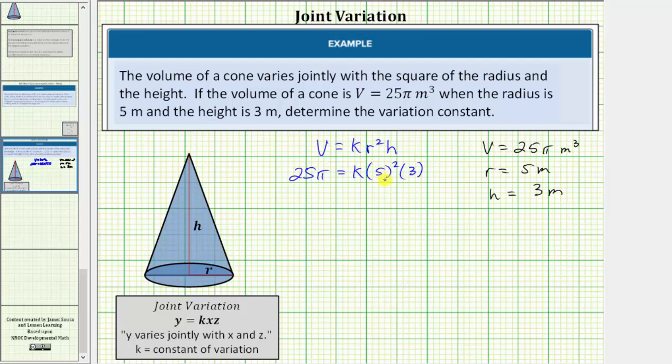Simplifying on the right side, 5 squared is 25, 25 times 3 is 75, so the right side simplifies to 75k. So we have 25π equals 75k.